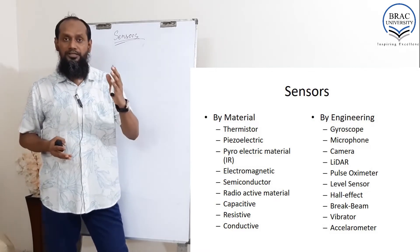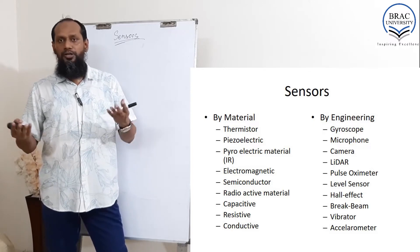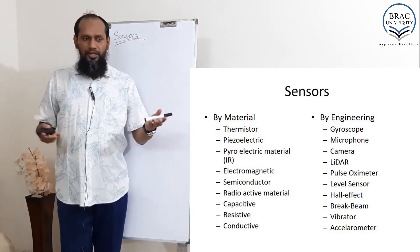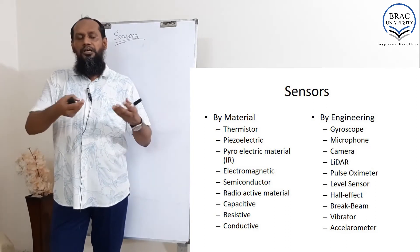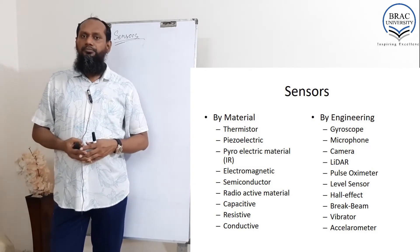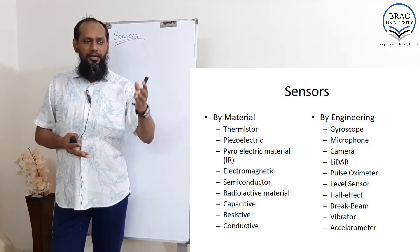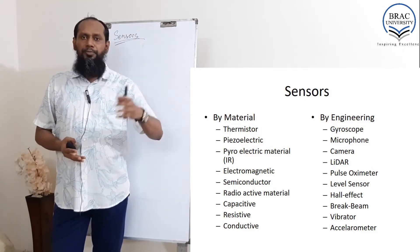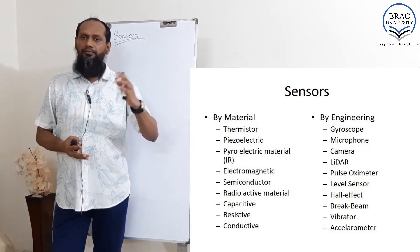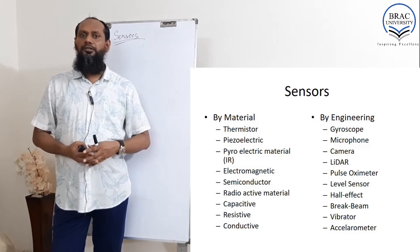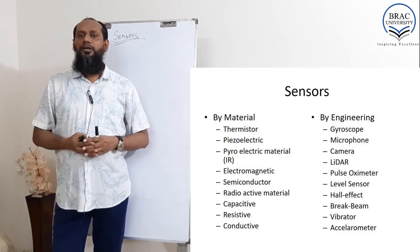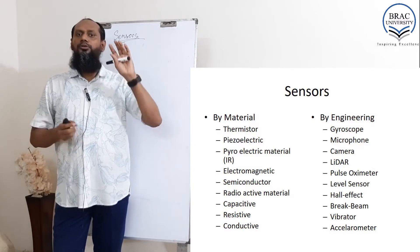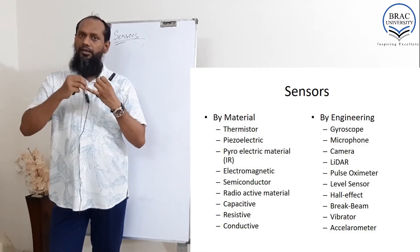We are going to discuss these in detail: one is gyroscope, another is microphone — which uses electromagnetic sensing. Camera uses CCD. LiDAR uses laser sensing. Pulse oximeter works using light sensing. Level sensor uses a magnet and Hall effect sensor. Electromagnetic beam, IR, LDR, vibrator, and accelerometer — some also use capacitive sensors for measuring acceleration. So as I told you, sensing is either by material or by engineering.